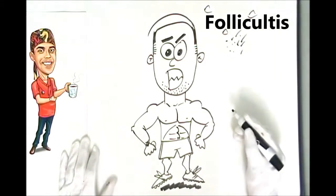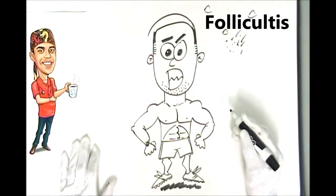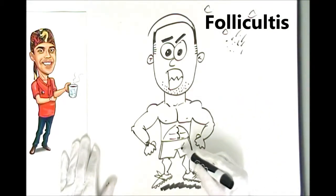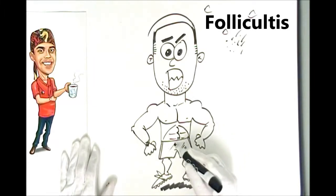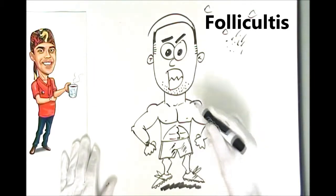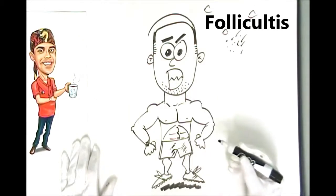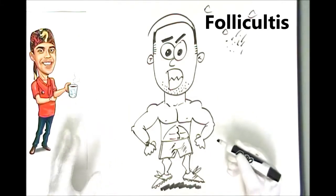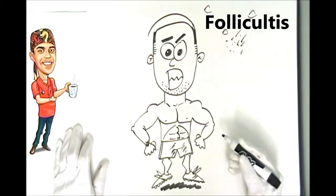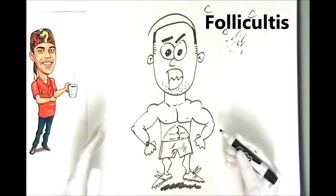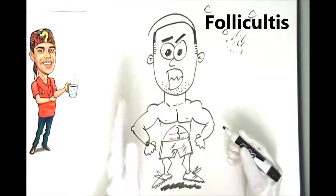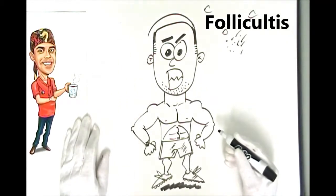Folliculitis happens in both males and females. Typical sites I tend to see it are the upper thighs and especially the face in males. But you can really get it in any part of the body where there's hair, and it tends to be symmetrical — if it's on one side it's usually on the other side too.